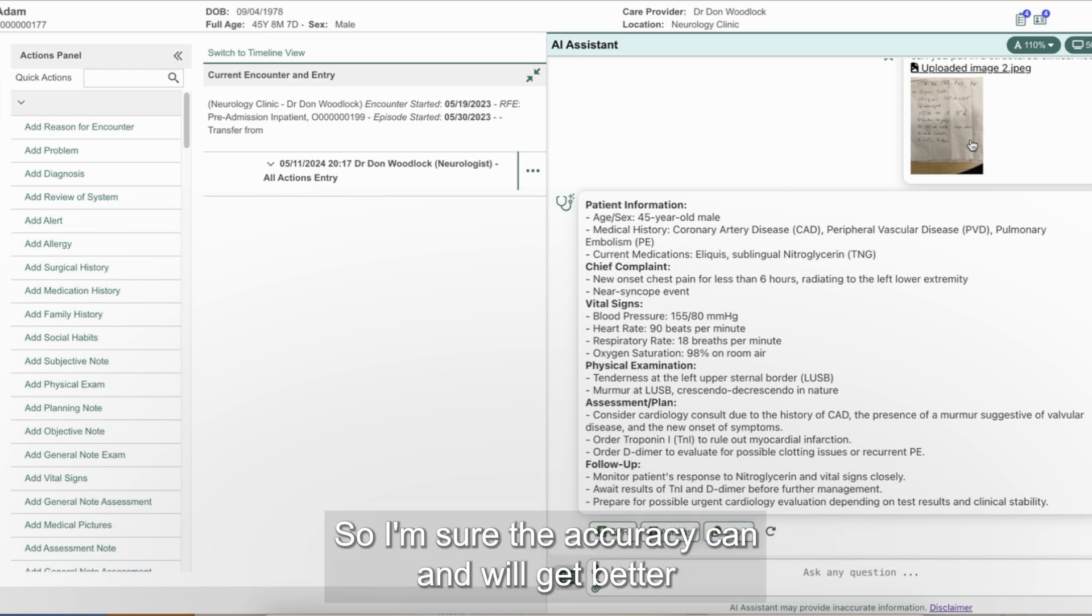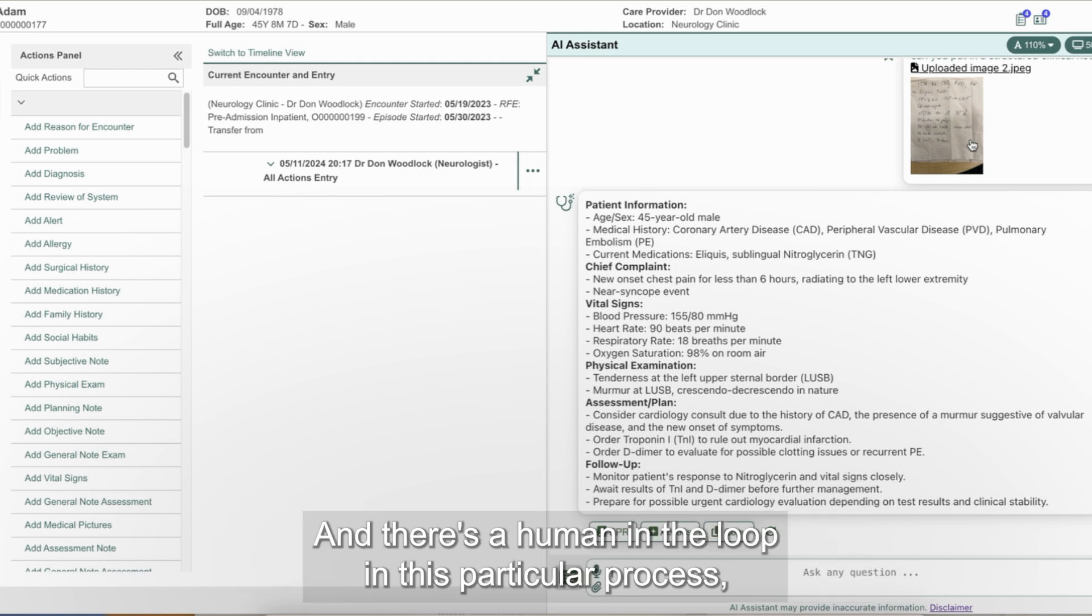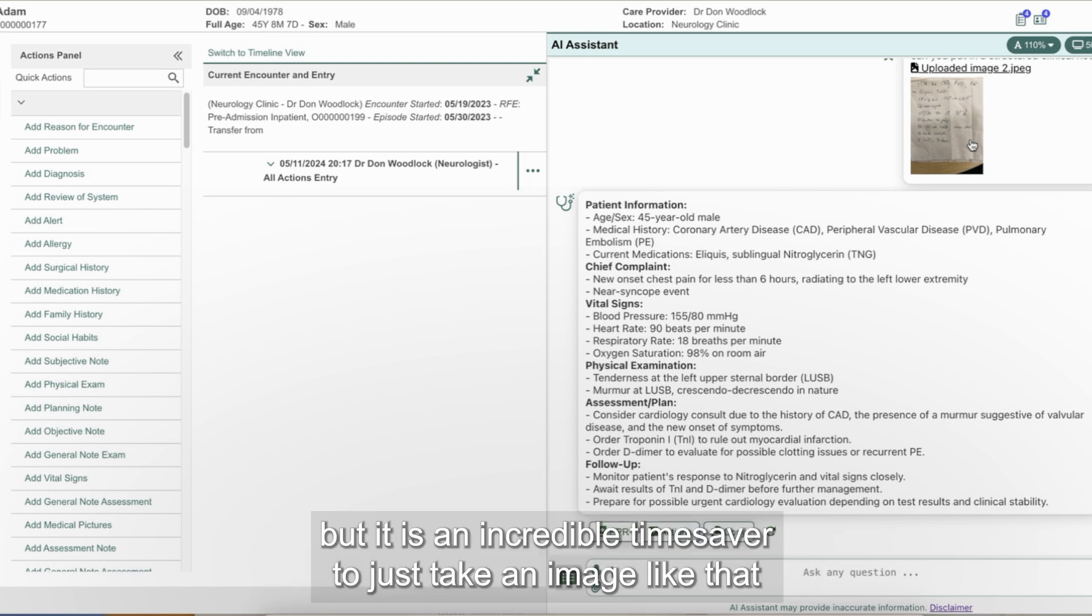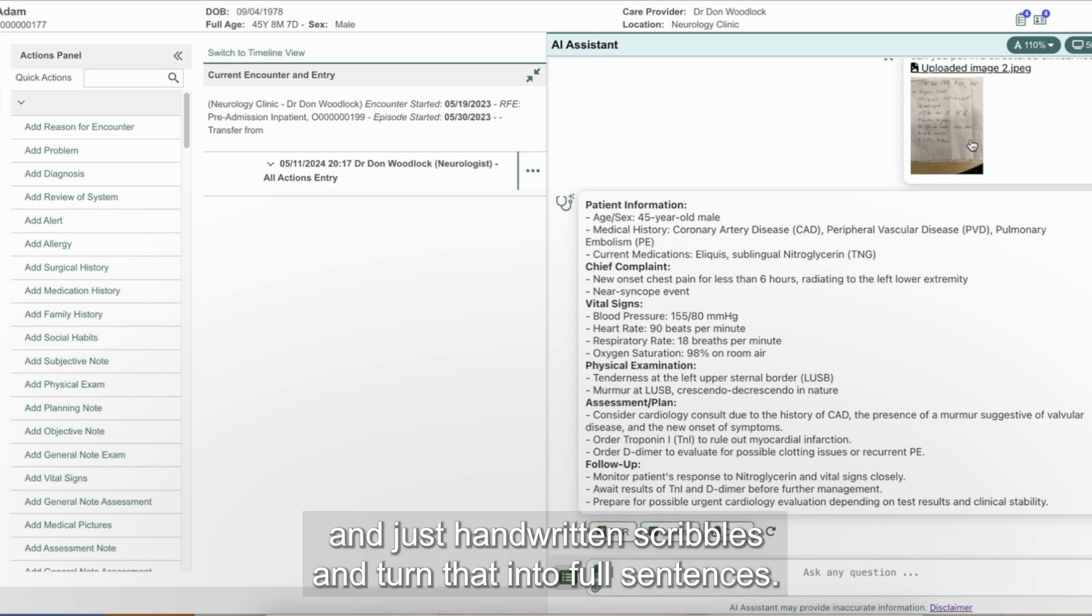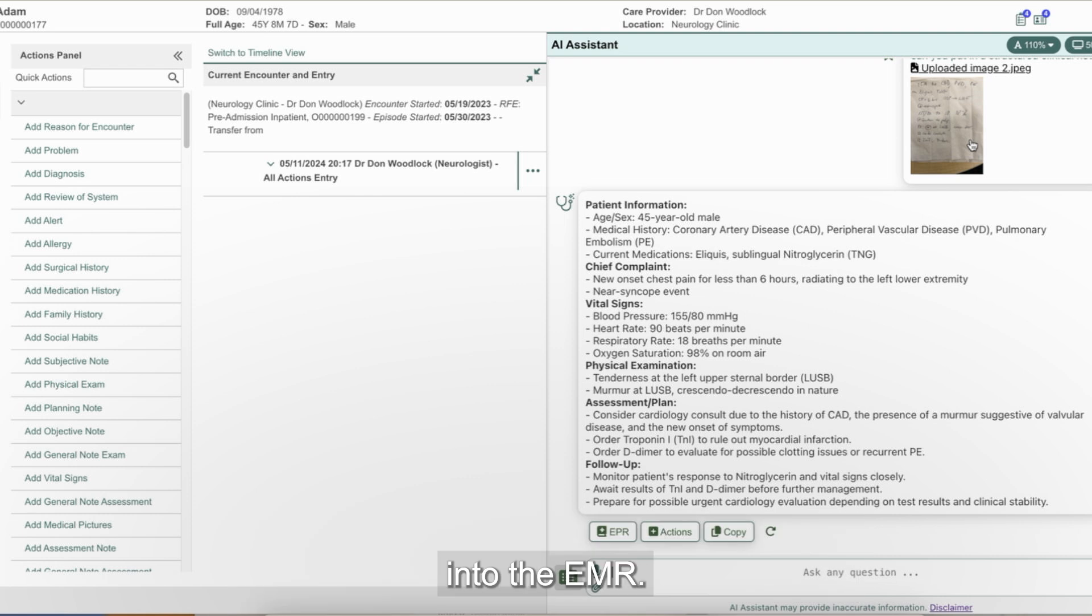So I'm sure the accuracy can and will get better as we have new versions of models, better prompts in our development process. And there's a human in the loop in this particular process, which is great and necessary, given it's not perfect. A physician should review the note and make any final edits, but it is an incredible time saver to just take an image like that and just handwritten scribbles and turn that into full sentences. And a pretty accurate, but not perfect note for the physician to edit and file into the EMR.